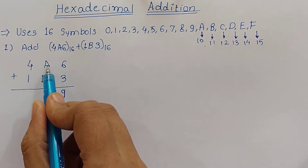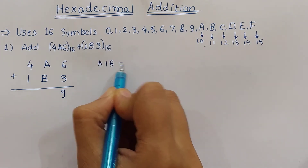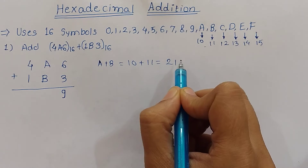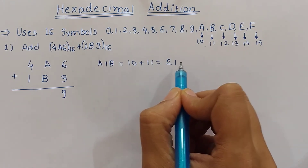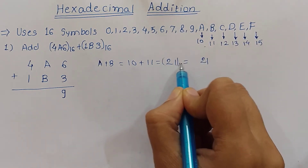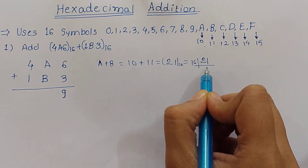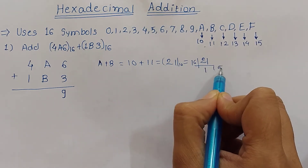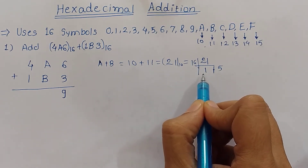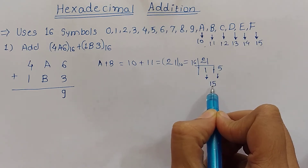Now A plus B. A means 10 in decimal and B means 11. So 10 plus 11 is 21. Now 21 is a decimal number and we want the hexadecimal equivalent. To convert decimal to hex we divide by 16. If we divide 21 by 16, we get 1 with remainder 5. So the hexadecimal equivalent is 15.